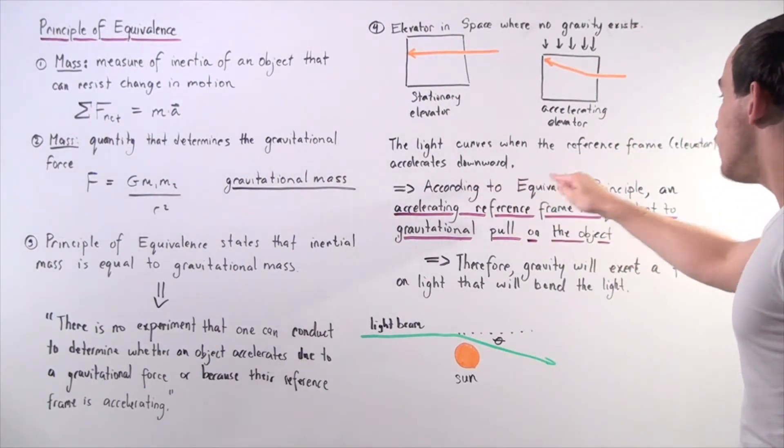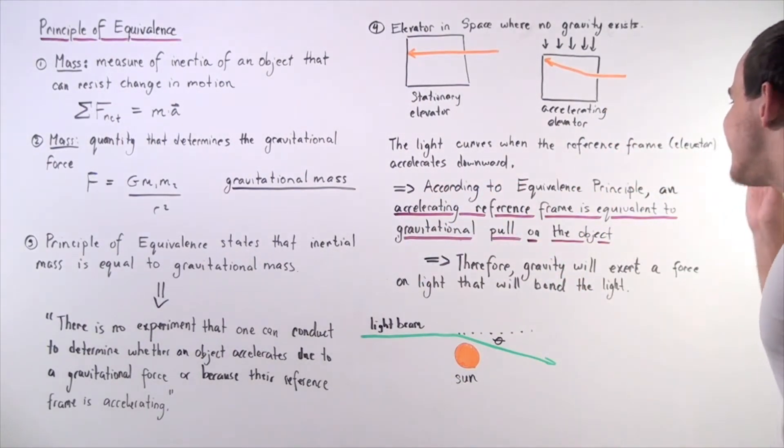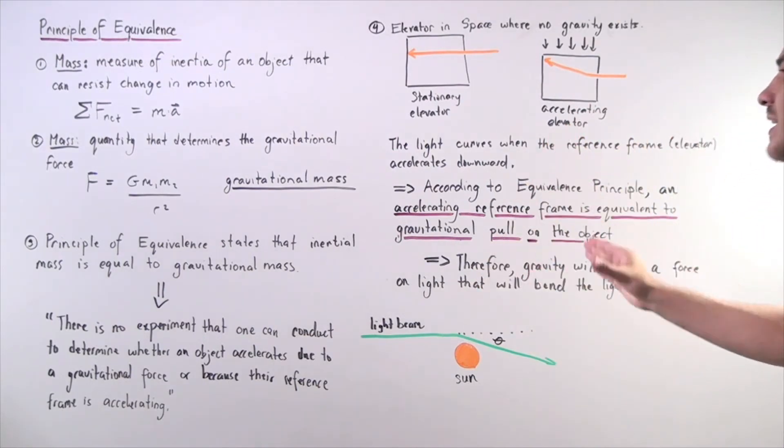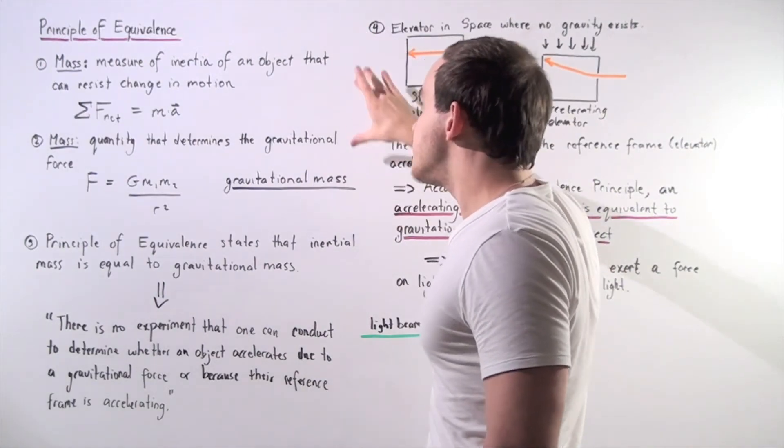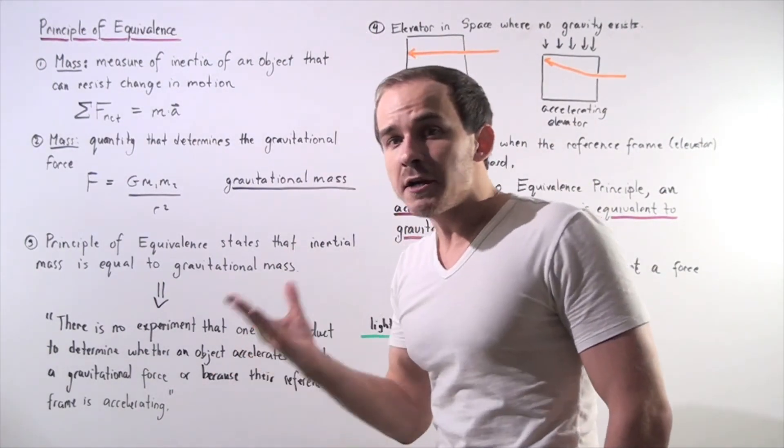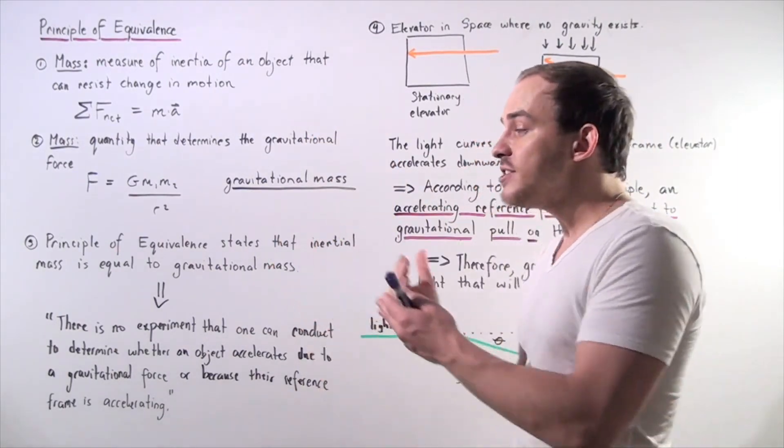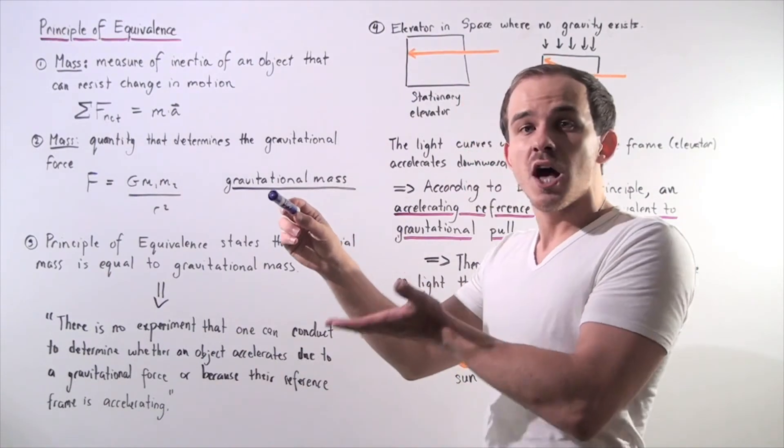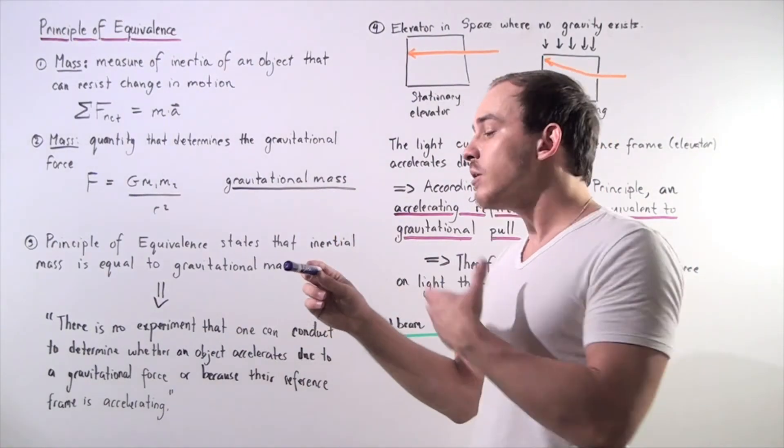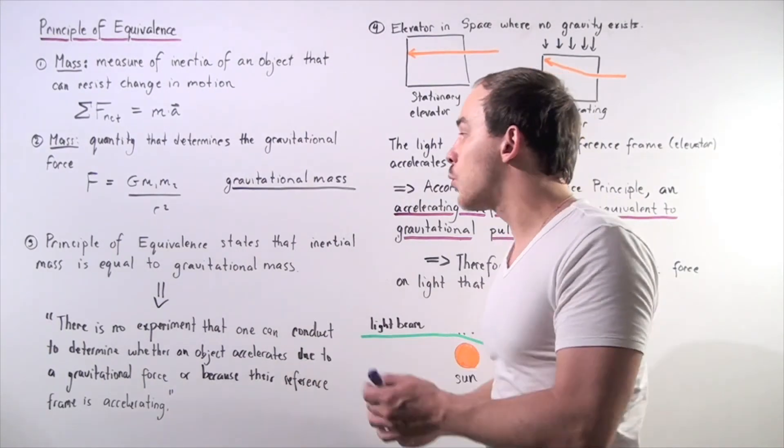So according to the equivalence principle, an accelerating reference frame is exactly identical to the gravitational pull on the object. Because earlier we said these two definitions are exactly the same. There's no experiment that we can conduct to differentiate between these two cases, whether our object actually accelerates because of gravity or our object accelerates because our reference frame, the ground, the earth, moves upward.